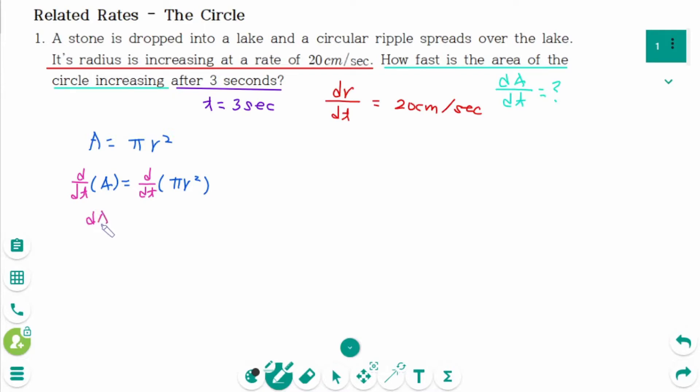Using the chain rule, dA/dt equals 2 pi r times dr/dt. Now plug in all the information. The radius is increasing at a rate of 20 centimeters per second. After 3 seconds, r equals 20 times 3 equals 60 centimeters. Then r is 60 times dr/dt is 20 equals 2400 pi centimeter squared per second.